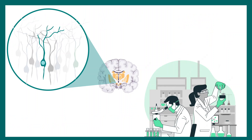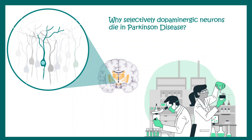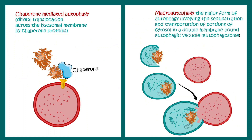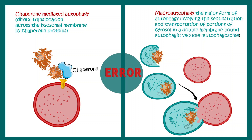Though we know some aspects of Parkinson's pathology, many questions remain unanswered. One key question is why selectively the dopaminergic neurons die, and not cholinergic or glutamatergic neurons. Another question is why dopaminergic neurons are more susceptible to Lewy body formation. One possible answer could be a disbalance in proteostasis. When there are misfolded proteins in the cell, autophagy mechanisms try to clear or recycle these proteins, but if there is an error in this system, accumulation of misfolded proteins may lead to disease progression.